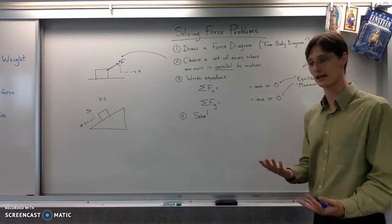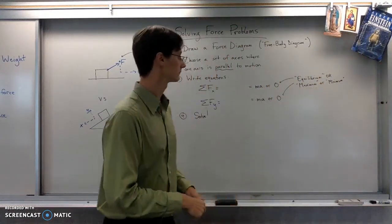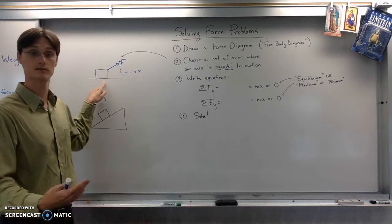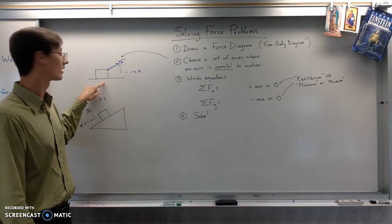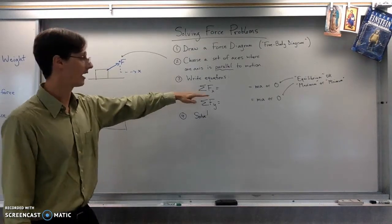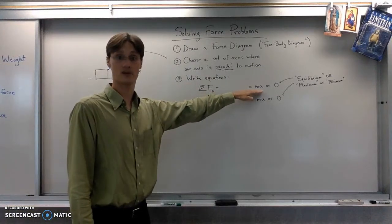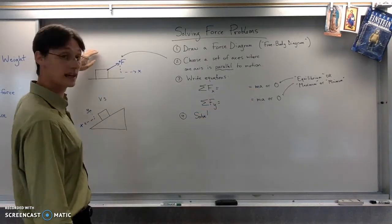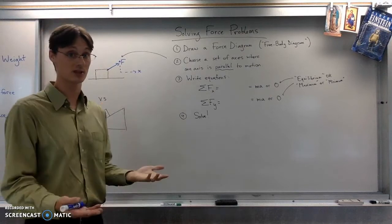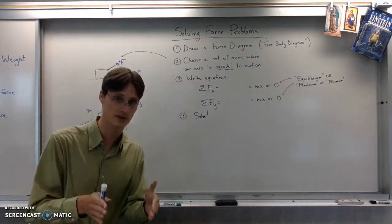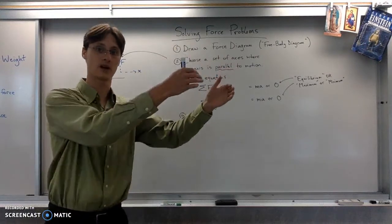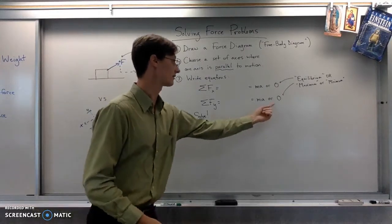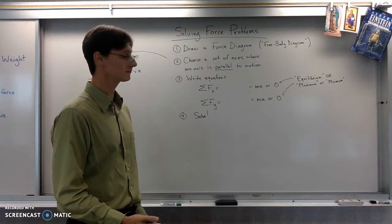The right side of that equation, since Newton says f equals ma, is always going to be either ma or it's going to be zero. And which one it is, kind of depends on the situation being described. So if it's something like this x and we say the object is accelerating in the x direction. Well, then for my x equation, I would say it's ma on the right side because it's not in equilibrium.